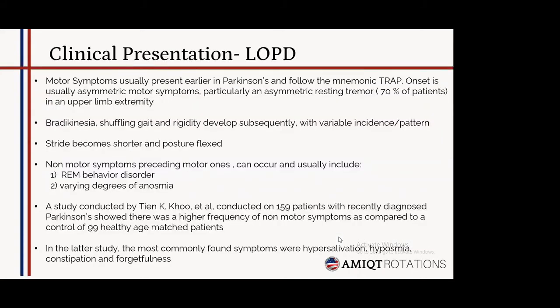Comparing late onset versus early onset Parkinson's clinical presentations: late onset Parkinson's presents with motor symptoms following the mnemonic TRAP — tremor, rigidity, akinesia, and postural instability. Onset is usually asymmetric, with resting tremor in around 70% of patients in an upper limb. Bradykinesia, shuffling gait, and rigidity develop subsequently. Stride becomes shorter and posture flexed. Non-motor symptoms can precede motor ones, including REM behavior disorder and anosmia. A study by Khoo et al. on 159 recently diagnosed Parkinson's patients found a higher frequency of non-motor symptoms compared to 99 healthy age-matched controls — most commonly hypersalivation, hyposmia, constipation, and forgetfulness.